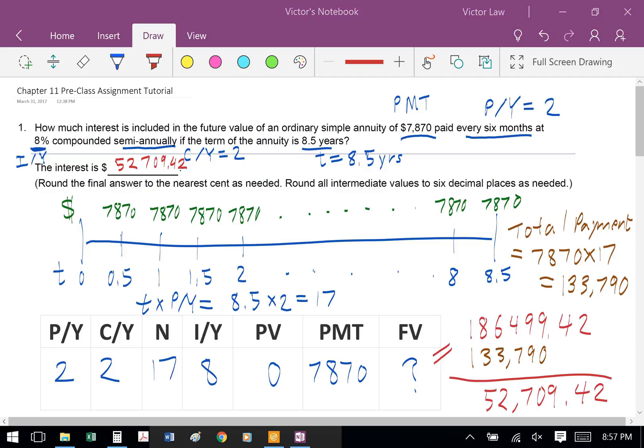To calculate the total interest, we take the difference between the future value and the total payment. So we do $186,499.42 minus $133,790. The answer for the total interest is $52,709.42. And that's question one.